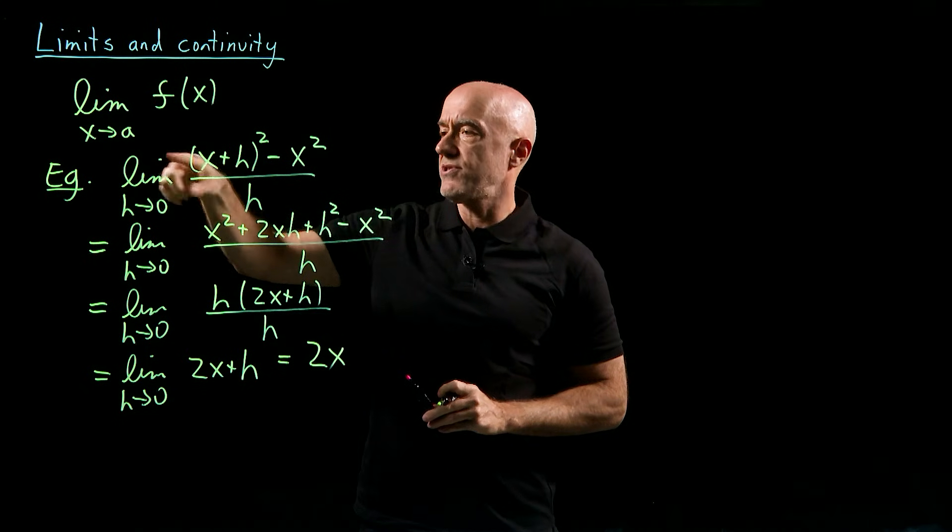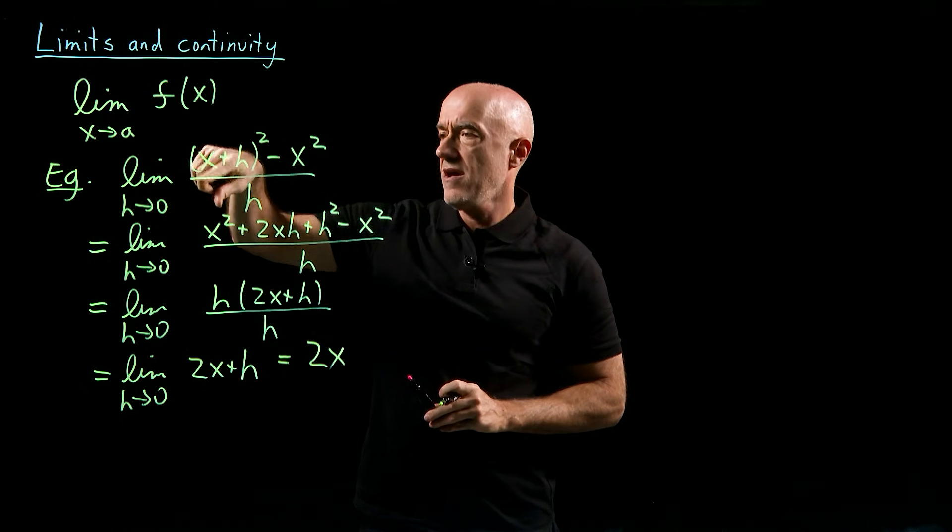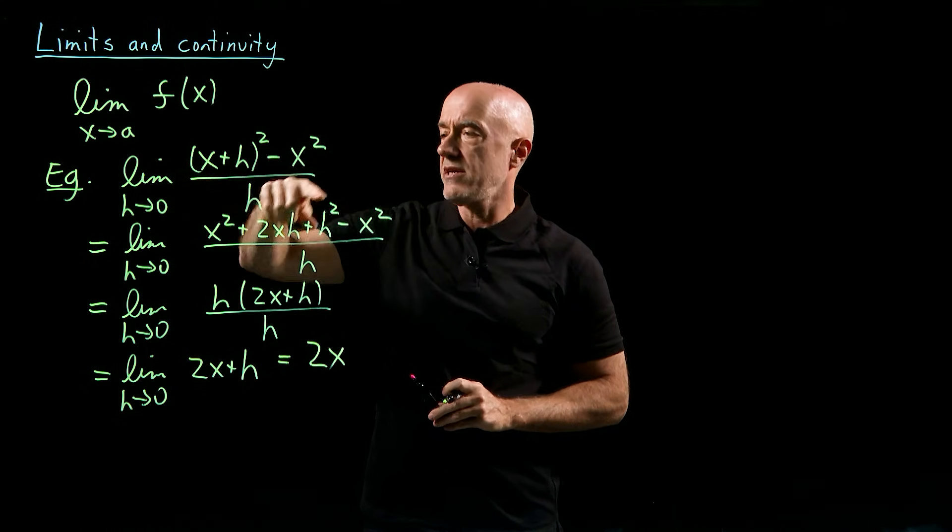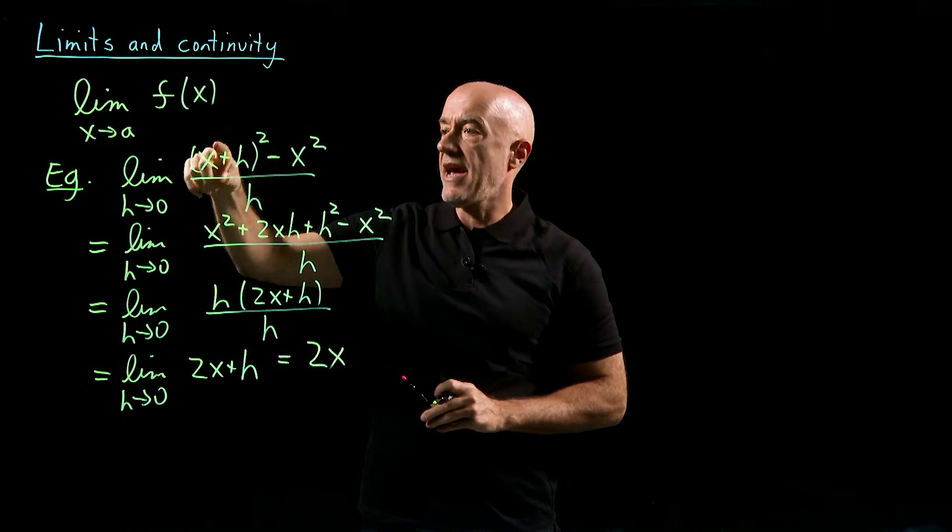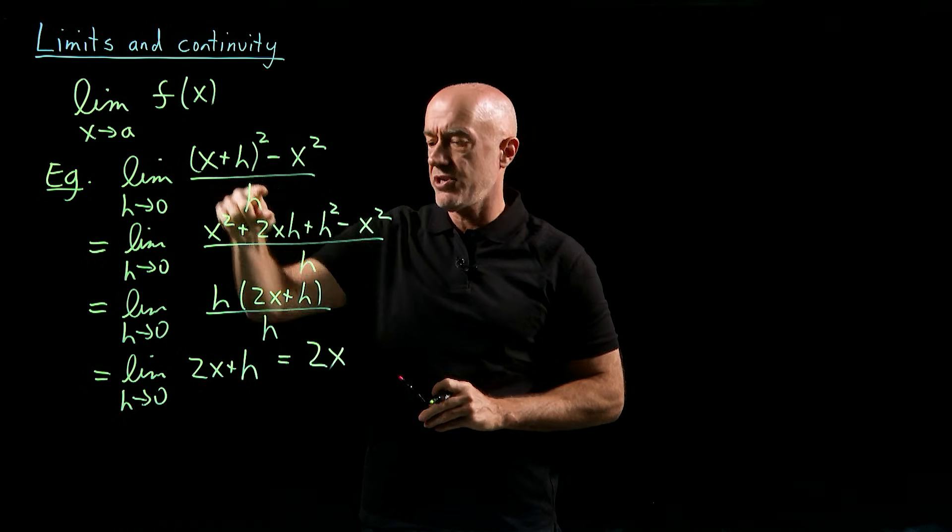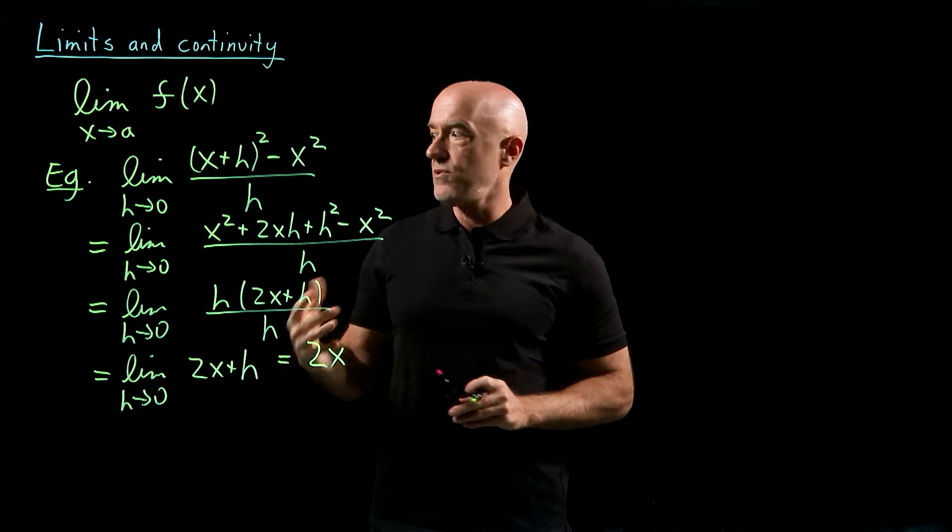So the limit as h goes to 0 of this function of h, (x+h)² - x² over h, is equal to 2x.